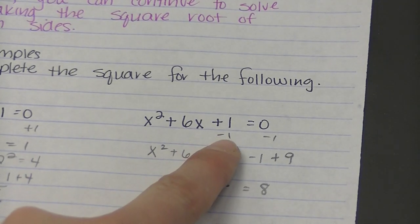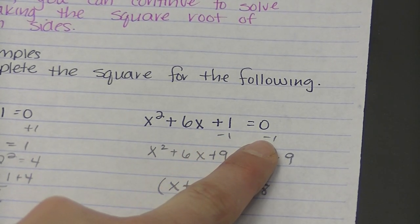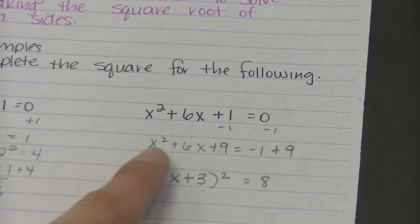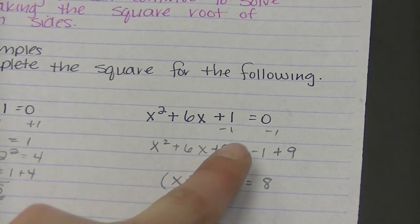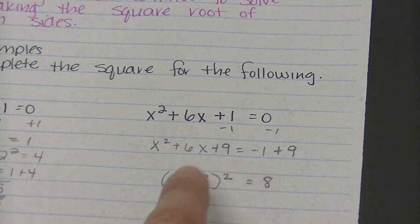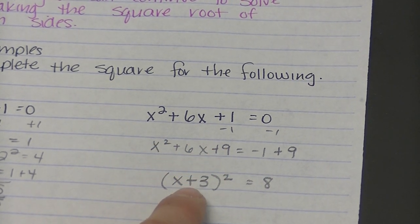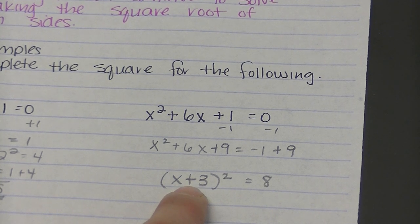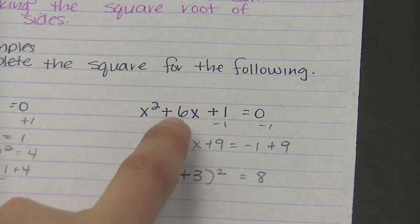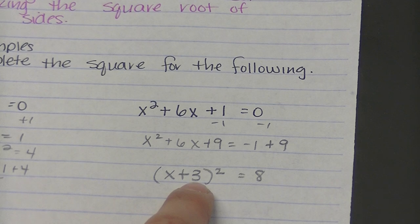For my next example, I'm going to get rid of that 1 by subtracting 1 from both sides. Then I've got x squared plus 6x plus 9 equals negative 1 plus 9 or 8. So when I factor this side, I get x plus 3 and x plus 3 again or x plus 3 squared. If you'll notice that half of 6 is 3 and that's what always ends up in here.